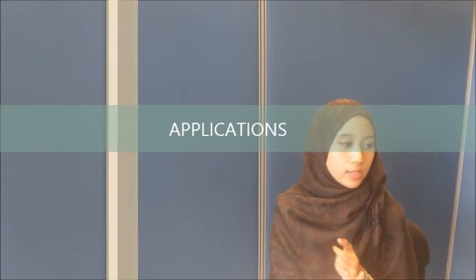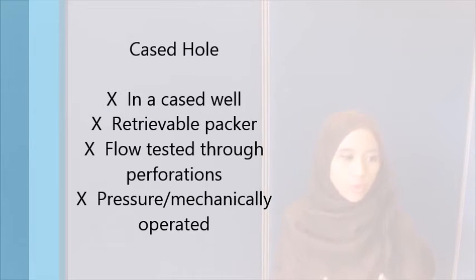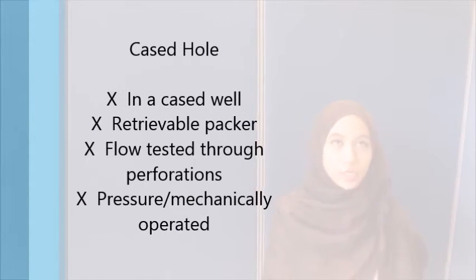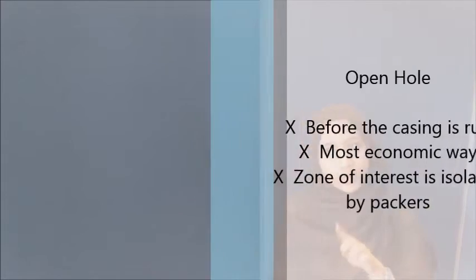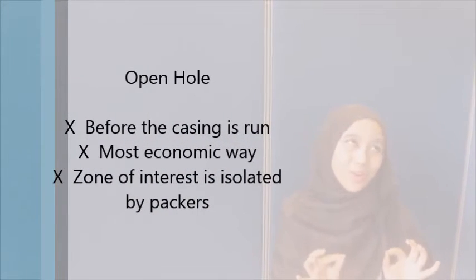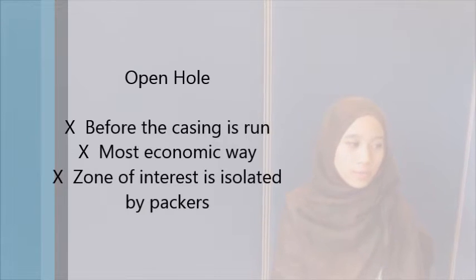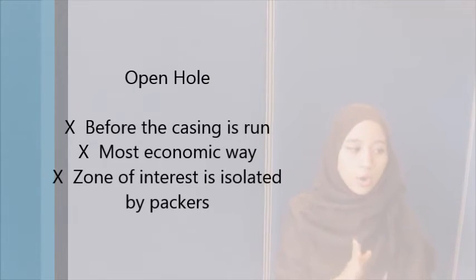DST can be applied to two types of holes. First is a cased hole, where DST is performed after the well is cased and a retrievable production packer is set above the zone of interest. The well is flow tested through perforations in the casing, and cased hole testing could be pressure-operated or mechanically operated. The second is open hole, performed before the casing is run — the most economical way to determine productive capacity, pressure, permeability, or the extent of the hydrocarbon reservoir. Testing equipment is run into the well and the zone of interest is isolated using inflatable or compression set methods.